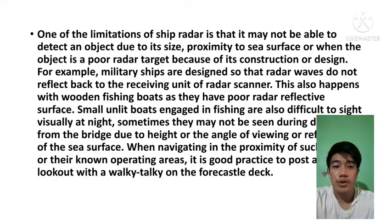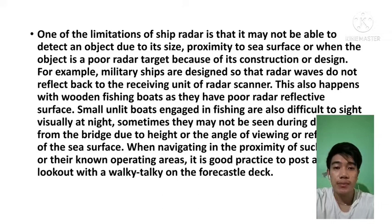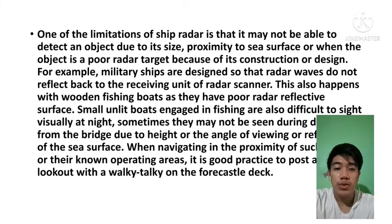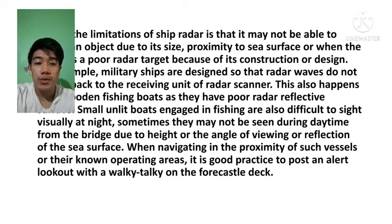One of the limitations of ship radar is that it may not be able to detect an object due to its size, proximity to the sea surface, or when the object is a poor radar target because of its construction or design. For example, military ships are designed so that radar waves do not reflect back to the receiving unit of the radar scanner. This also happens with wooden fishing boats as they have poor radar reflective surfaces. Small unit boats engaged in fishing are also difficult to sight visually at night, and sometimes may not be seen during daytime from the bridge due to height or the angle of viewing, or the reflective nature of the sea surface.